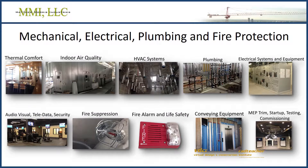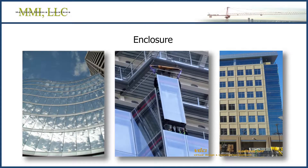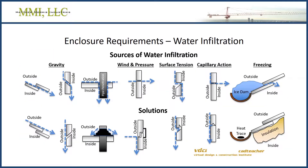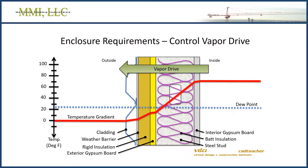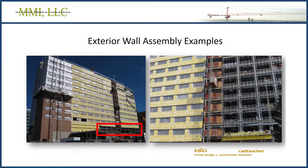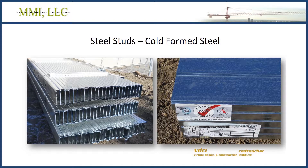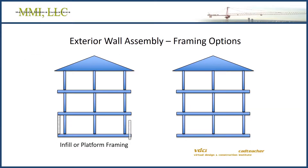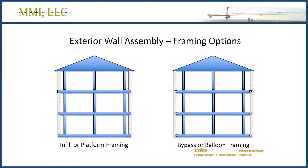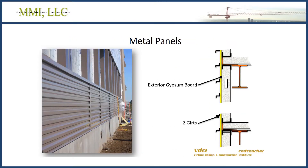In this third course, The Building Envelope, you will learn about maintaining the integrity of the building, keeping water out, and ultimately controlling the building's temperature and humidity. You will learn about building cold-formed steel stud wall systems, which are the most commonly used wall systems in commercial projects. You'll learn about the wall system materials themselves, framing options, infill framing, and bypass balloon framing.